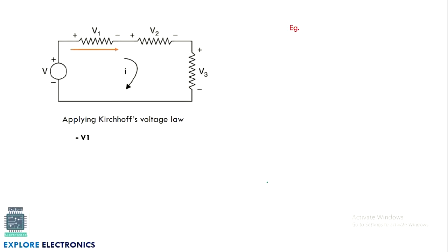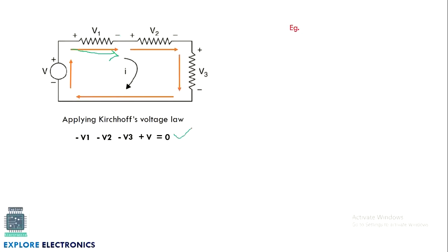For this particular circuit, if we take the current direction this way, the voltages V1, V2, V3 are taken as negative because we are moving from positive to negative. In a resistor, the voltage will drop. In a source, the voltage will rise. We consider this as a voltage source, so we take that as minus. Rearranging the expression, V1 plus V2 plus V3 — the voltage drops — will equal the voltage source or EMF.